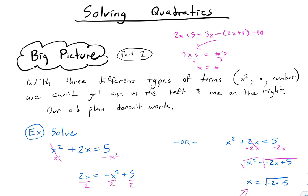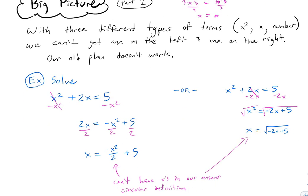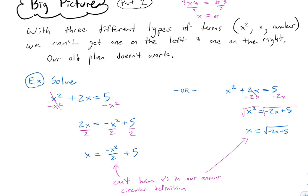The only reason that works is because we only have two types of things. We put the variable types on the left, scoop them into a pile — like 8x's — and on the right, we just have numbers, even if it's a decimal like 8.1. Then you just divide. But when we introduce x squared, we now have three different types of terms: x squareds, x's, and numbers.